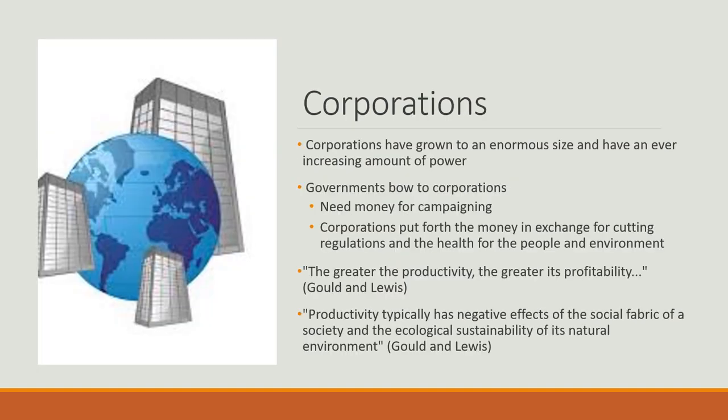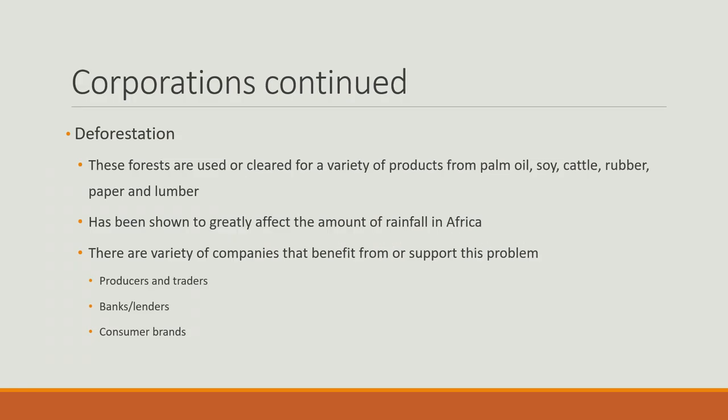Corporations are another contributor to the problem. They have grown to an enormous size and have an ever-increasing amount of power. Governments tend to bow down to corporations because they need money for campaigning. Corporations put forth money in exchange for cutting regulations on the health of people and the environment. The greater the productivity, the greater the profitability. One example is deforestation — forests are cleared for products including palm oil, soy, cattle, rubber, paper, and lumber. Deforestation greatly affects the amount of rainfall in Africa. Companies that benefit include producers, traders, banks, lenders, and consumer brands.